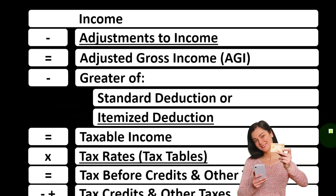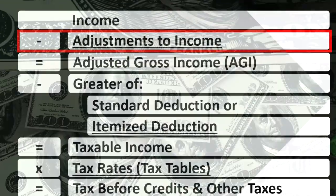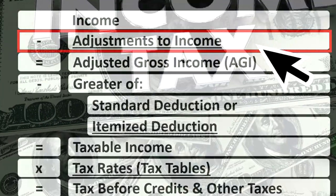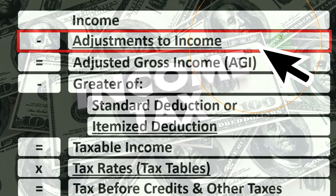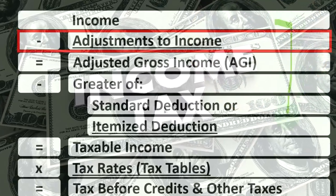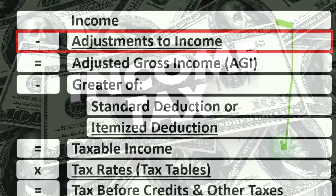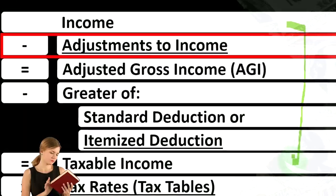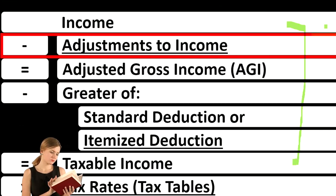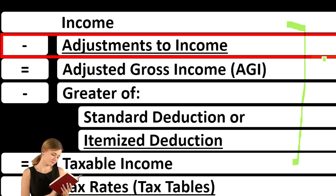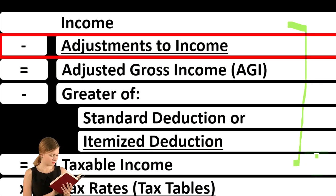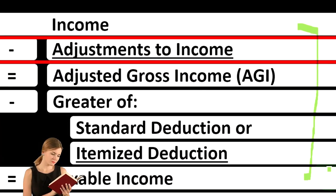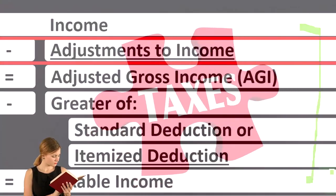Looking at our income tax formula, we're focused on line number two, adjustments to income. Remember that the first half of the income tax formula is in essence an income statement, although a strange one, where we have income minus the equivalent of the expenses — those being the deductions — getting down to the bottom line, the equivalent of net income. But here, taxable income.